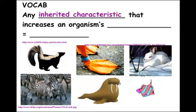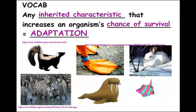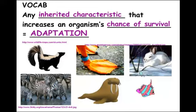Vocab word: any inherited characteristic that increases your chance of survival is called an adaptation. Skunk smell is an adaptation — it scares away predators, since nobody wants to get sprayed. Webbed feet are an adaptation that helps you swim in water and escape predators. Camouflage — like zebra stripes or white fur in a snowy place — is also an adaptation. Tusks to fight off predators and gills to breathe in water are all characteristics that help an organism survive in their place.